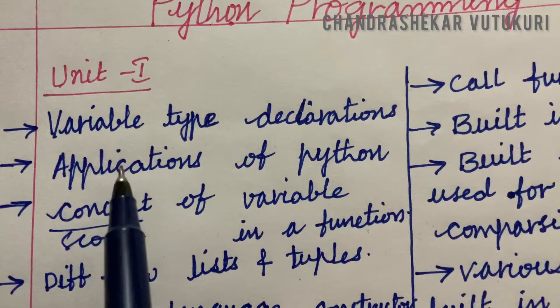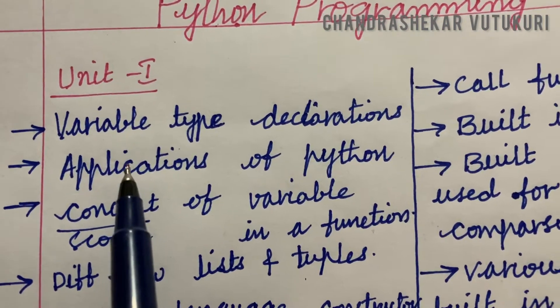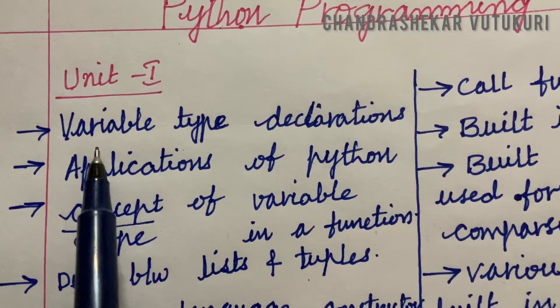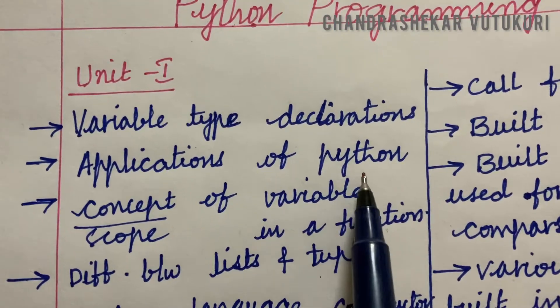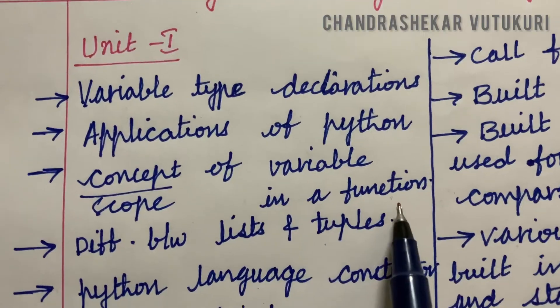Please work out accordingly and score good marks. The paper pattern may be a bit difficult this time. Do work out the variable type declarations and its types, the applications of Python, and the scope and concept of variable in a function.